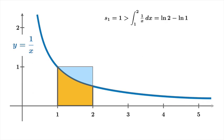ln(1) is zero. So let's drop that. So we've concluded that s₁ is greater than ln(2). Now by itself, that's not very exciting. But we can generalize this argument.